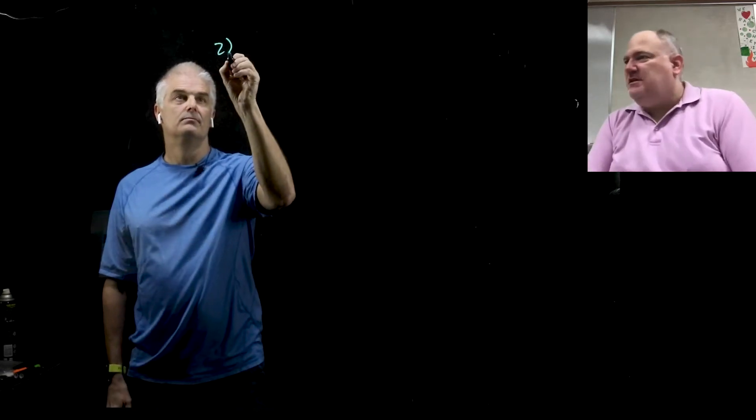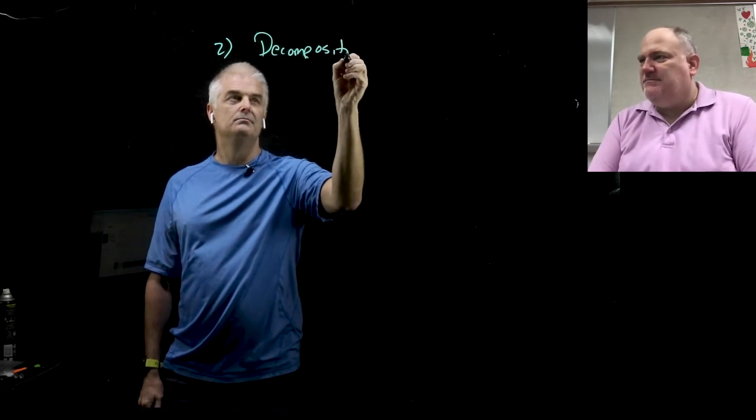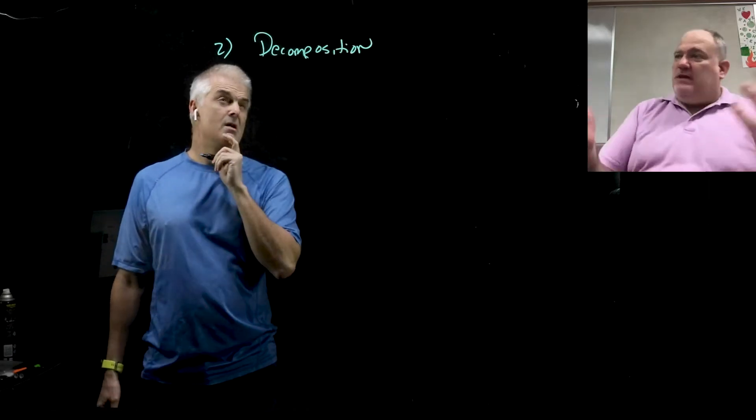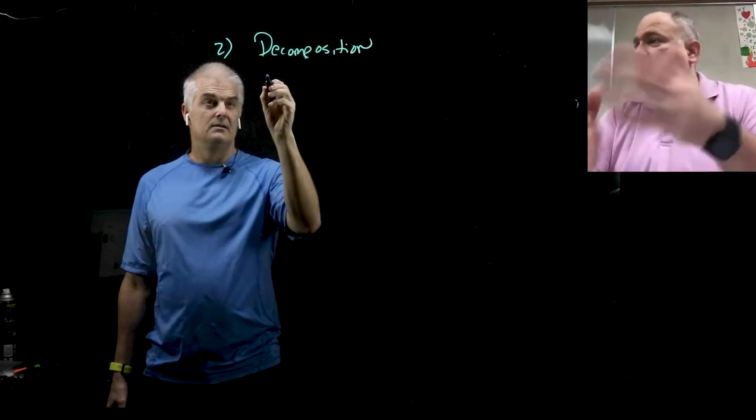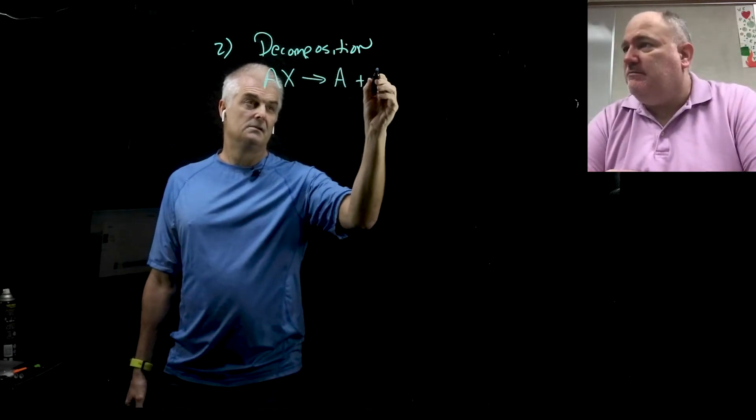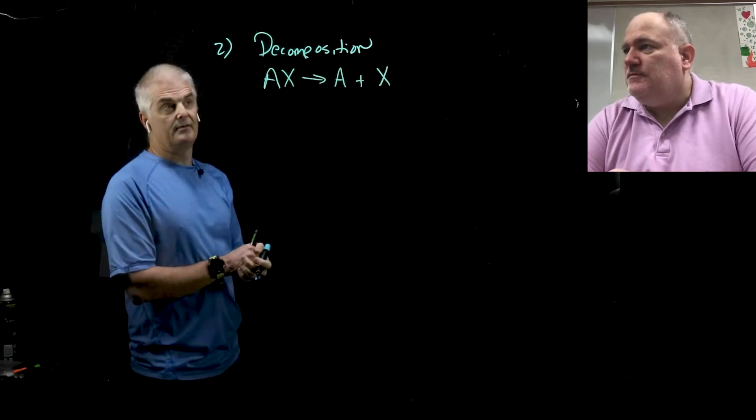Now let's take a look. What's the second type? The second type is a decomposition. And the nice thing about decomposition is it literally is the exact opposite of a synthesis. So what would that formula be, sort of in the symbolic form? So it literally would be exactly the opposite. So let's go AX. And that's going to break apart into A plus X. Perfect.